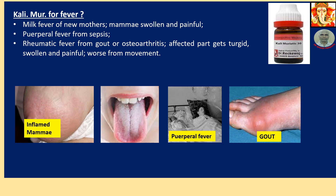Calimure for fever. This is indicated for milk fever of new mothers where the breasts are swollen and painful. Also for peripheral fever from sepsis, and rheumatic fever from gout or osteoarthritis. The affected parts get swollen, painful, and worse from movement — 'targeted' meaning filled with soft fluid-like material.